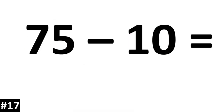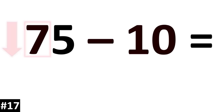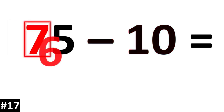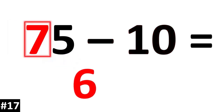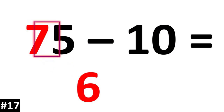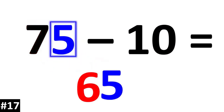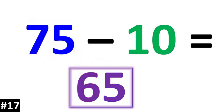75 minus 10. The tens value of 7 is going to go down to 6. The ones value stays the same, so 75 minus 10 is 65.